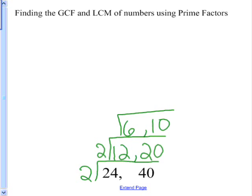Again, find a prime that goes into both, if possible. Again, we have 2. 2 goes into 6 3 times. 2 goes into 10 5 times.